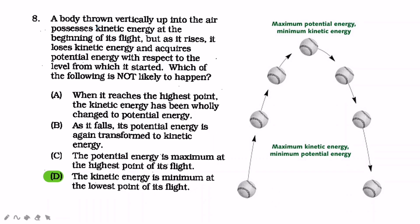A body thrown vertically up into the air possesses kinetic energy at the beginning of its flight. But as it rises, nawawala yung kinetic energy, nagiging na siyang potential energy with respect to level from which it started. Which of the following is not likely to happen? Always remember when reading your question, tatandaan mo pag nagbabanggit ng not, except, or ganyan. A, when it reaches the highest point, the kinetic energy has been wholly changed to potential energy - that's true. Actually kinetic energy mo pa ay zero. As it falls, its potential energy is again transformed to kinetic energy - true. The potential energy is maximum at highest point. Yung sagot is, the kinetic energy is minimum at the lowest point. No, kasi highest siya sa pinakababa.